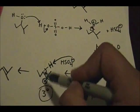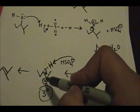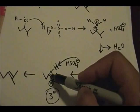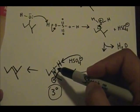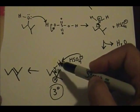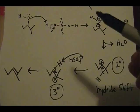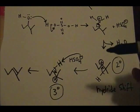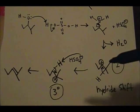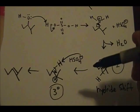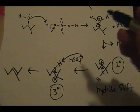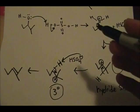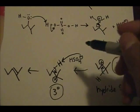When doing this reaction, you have to keep in mind you want to make the most substituted alkene product. That refers back to Zaitsev's rule, which states you want to form the most substituted alkene product from the elimination step.